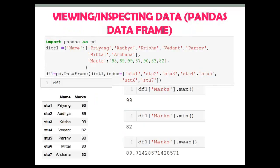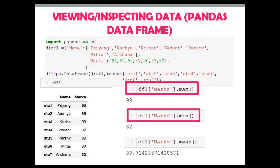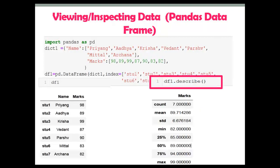Next, we can find the maximum value, minimum value, and average value from a particular column using the max, min, and mean functions. The describe function is used to view some basic statistical details like minimum, standard deviation, and percentile.